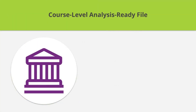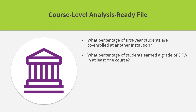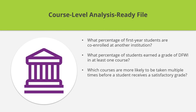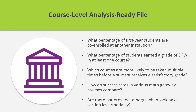This file can be used to answer questions like: What percentage of first-year students are co-enrolled at another institution? What percentage of students earned a DFWI in at least one course? Which courses are more likely to be taken multiple times before a student receives a satisfactory grade? How do success rates in various Math Gateway courses compare? And are there patterns that emerge when looking at section level or modality?